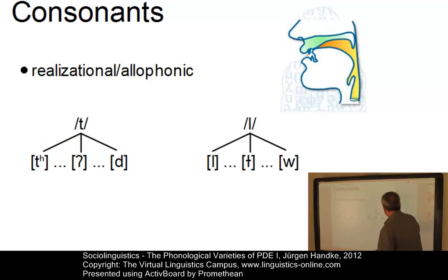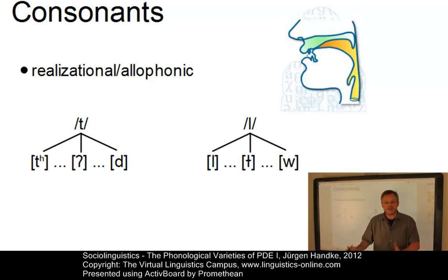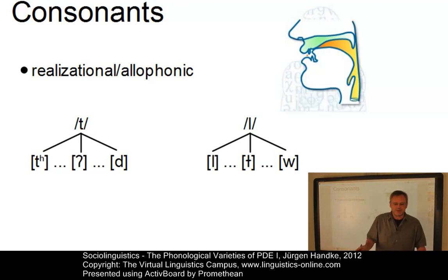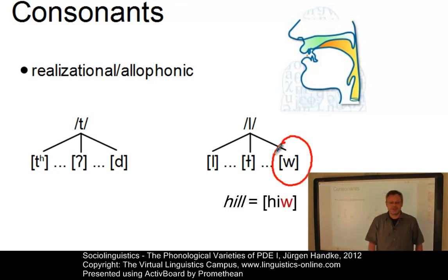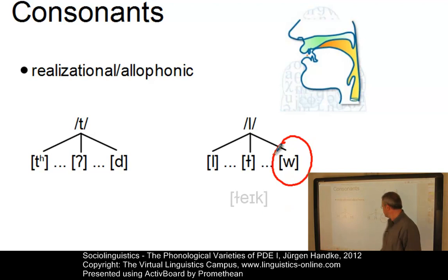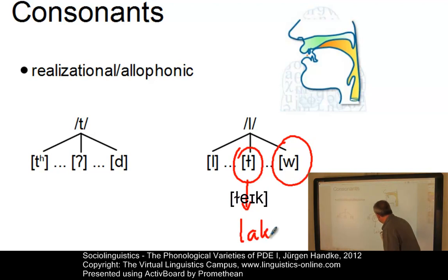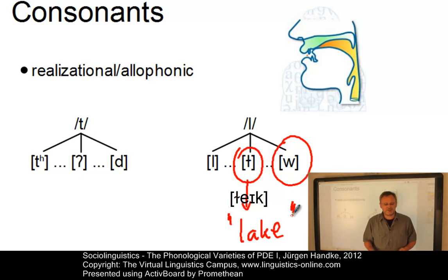Another interesting phoneme is the alveolar lateral. We can observe interesting variants in the phonological dialects of English around the world. For example, in Estuary English, there is a replacement of the final alveolar lateral by W in words such as 'hew' — in RP this would be 'hill'. In Scottish English, we might even find an initial alveolar lateral which is velarized, instead of a palatalized variant.